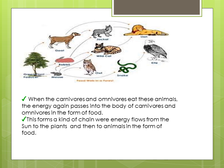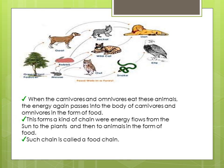This forms a kind of chain where energy flows from the sun to the plants and then to the animals in the form of food. Such a chain is called a food chain.